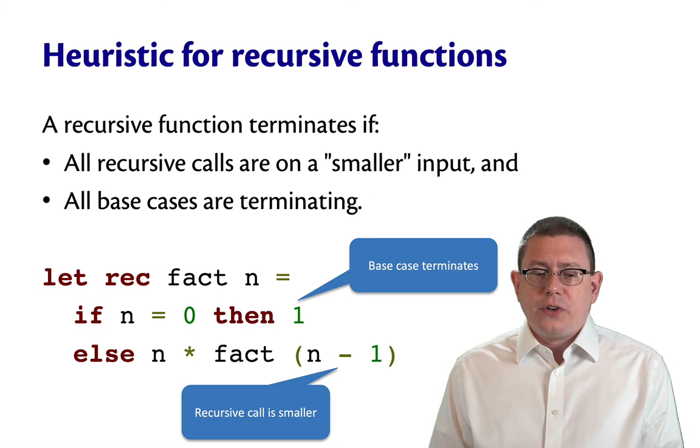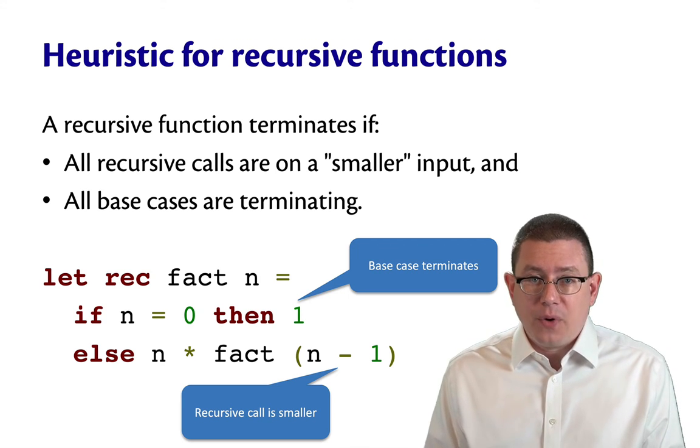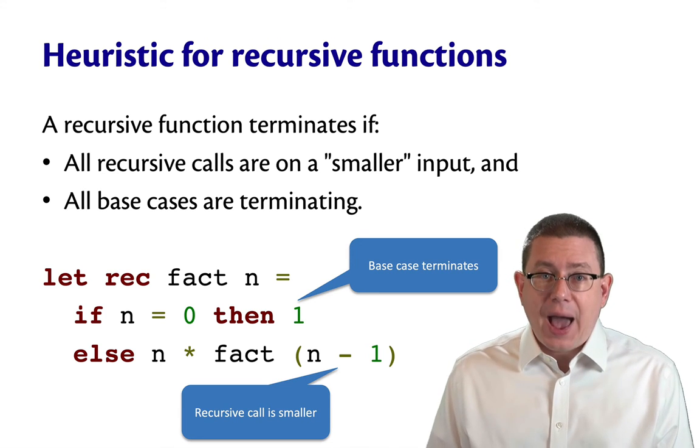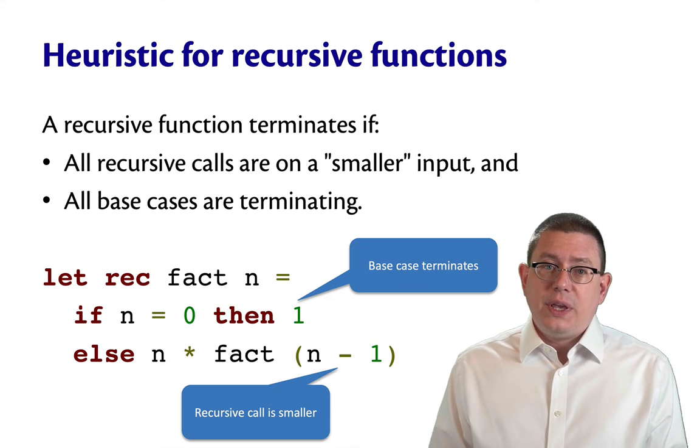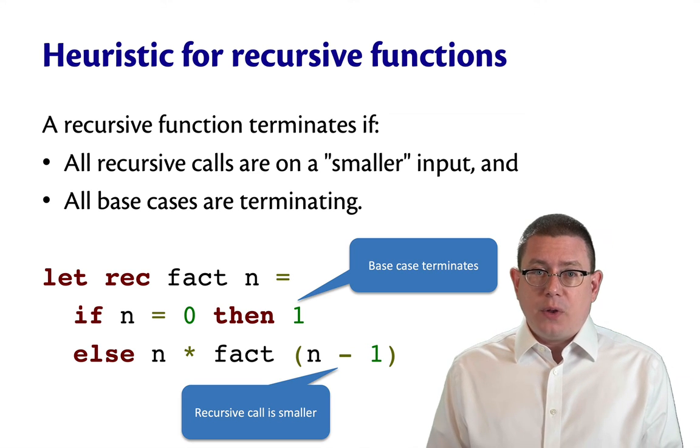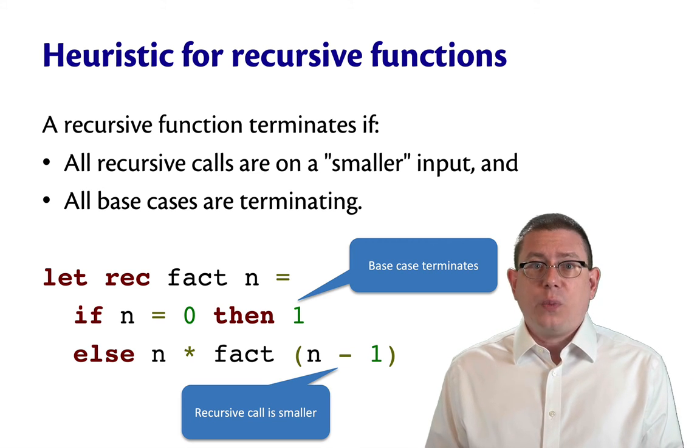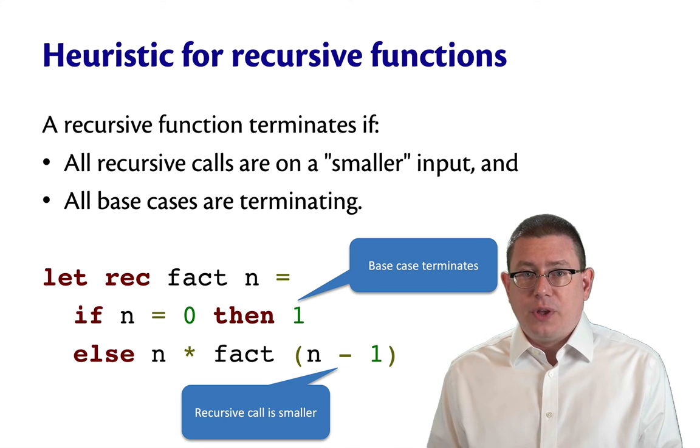So this recursive function does terminate on all natural numbers. Because when we pass in a natural number here, call it n, we either recurse on the next smaller natural number, n minus 1, or we get down to the bottom natural number, which is 0.